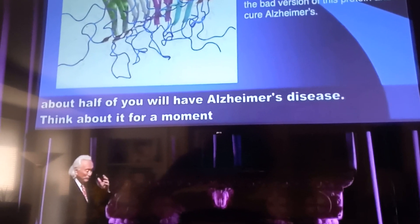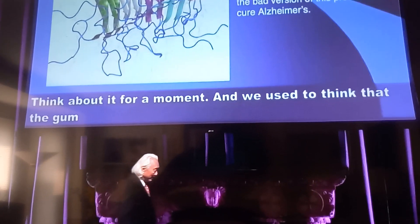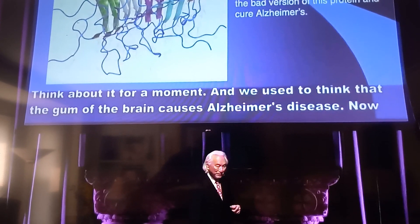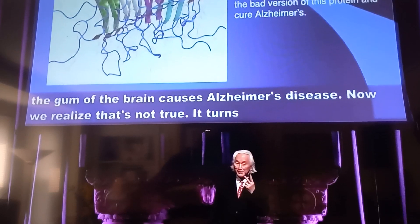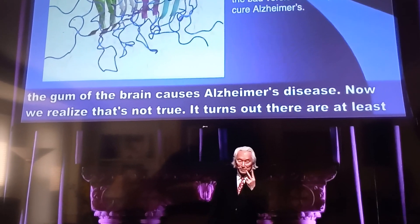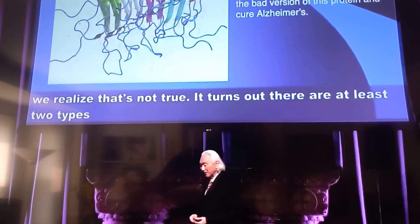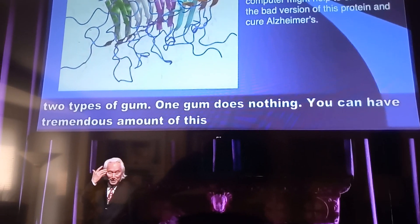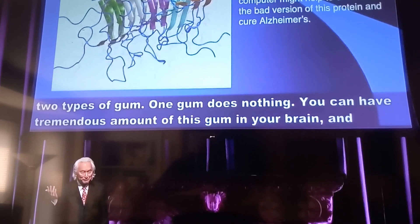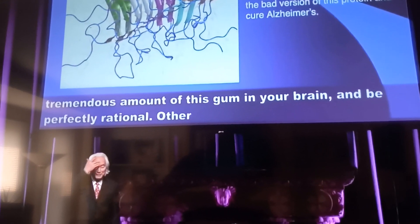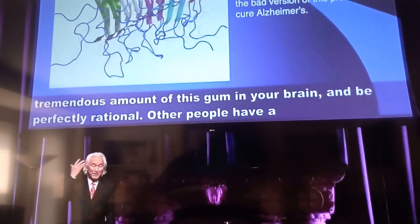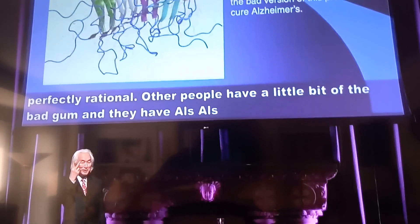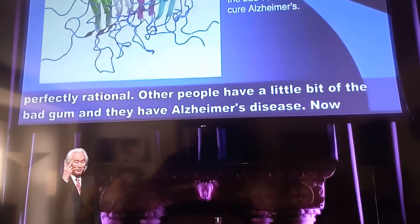And we used to think that the gum of the brain causes Alzheimer's disease. Now we realize that's not true. It turns out there are at least two types of gum. One gum does nothing — you can have tremendous amounts of this gum in your brain and be perfectly rational. Other people have a little bit of the bad gum and they have Alzheimer's disease. Now we realize that there are at least two types of amyloid proteins.